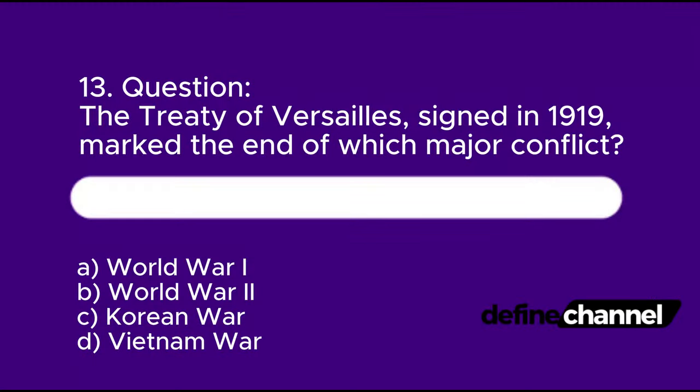Question 13: The Treaty of Versailles, signed in 1919, marked the end of which major conflict? A. World War I, B. World War II, C. Korean War, D. Vietnam War. Please determine which is the correct answer.